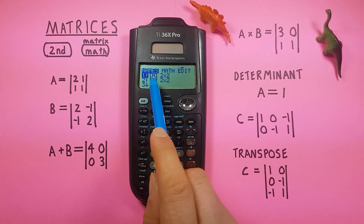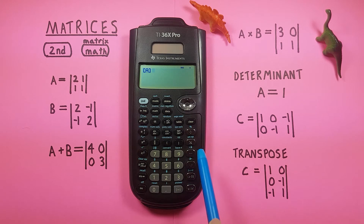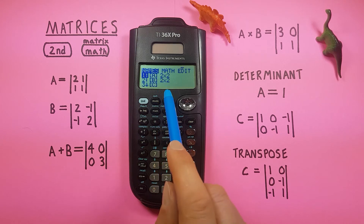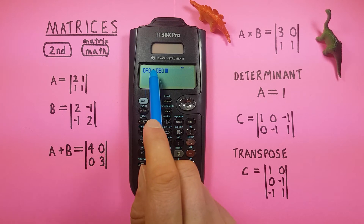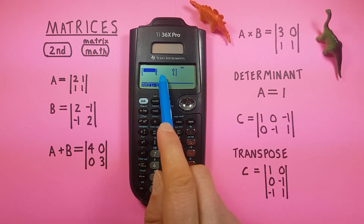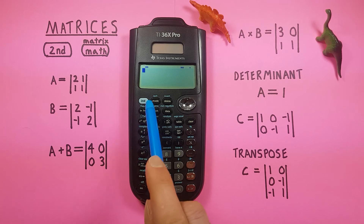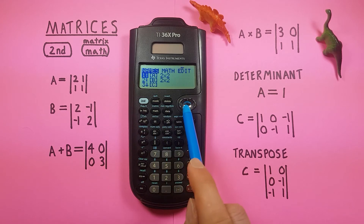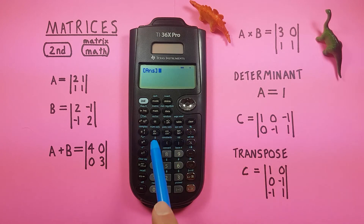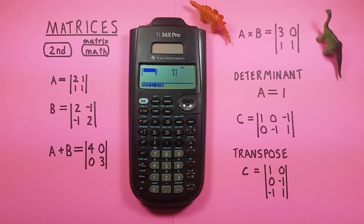We can also multiply matrices the same way. To multiply A by B, highlight A, place it on screen, press multiply, go to the matrix menu, and press two to select B. Press enter and we get the result of A times B. Checking the ANS slot confirms it stores our last calculated matrix.